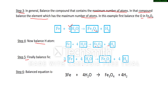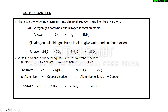Then we remove the boxes and get: 3Fe + 4H₂O → Fe₃O₄ + 4H₂. Remember, we do not write anything inside the box, and after balancing we remove the boxes. Now we will discuss some more examples.